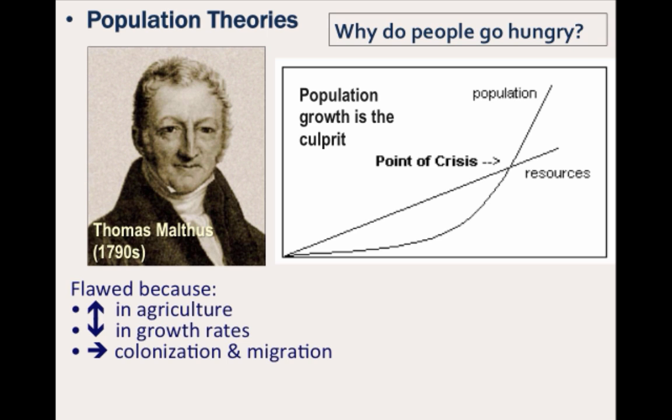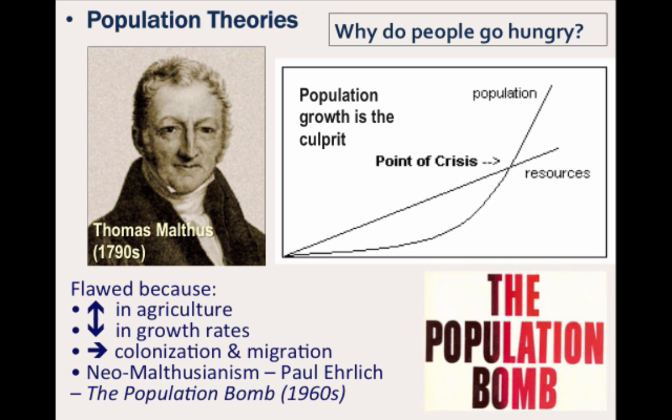Malthus gained notoriety especially in the 1960s when Paul Ehrlich wrote The Population Bomb. In the 1960s, the Earth was going through a period of relatively cooler temperatures, so there was less food per person and growth rates were at an all-time high. However, since then, the Earth has warmed up slightly, world growth rates have declined, and more food has been produced through the Green Revolution.